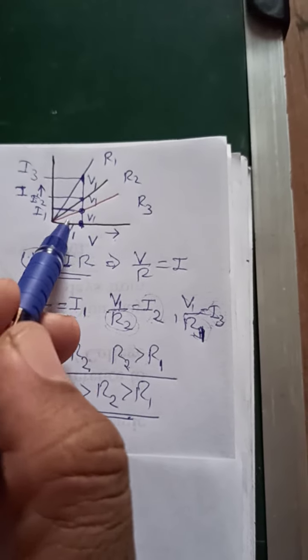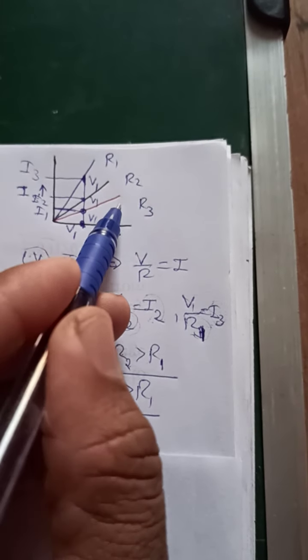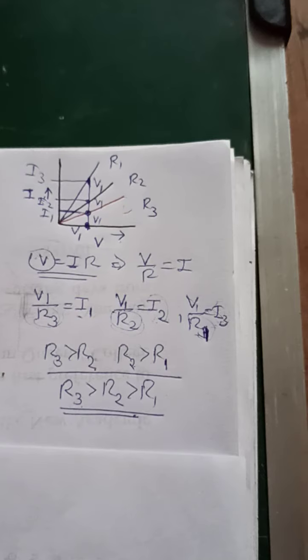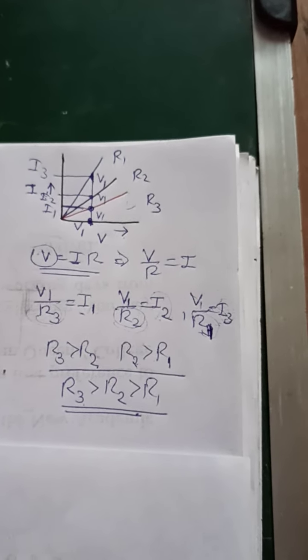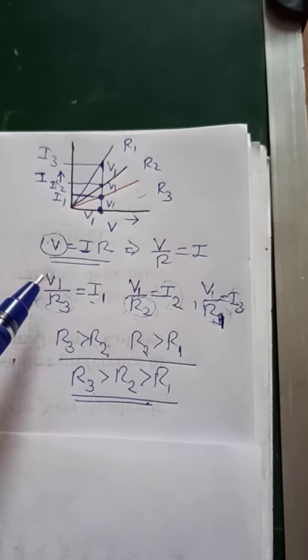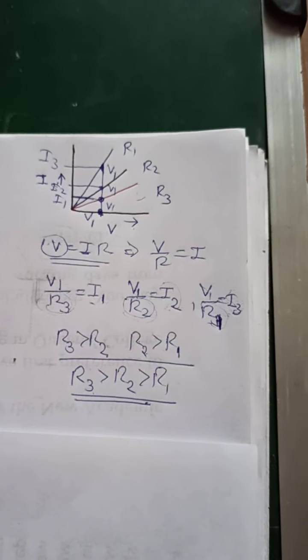So this condition we can solve conceptually. R3 is the highest resistance in this circuit. The complete question is mentioned in the description box.